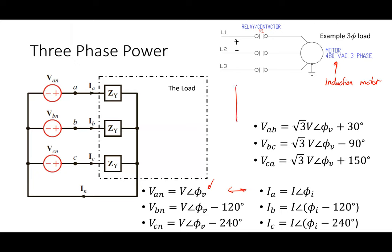Now the key thing: Vab, Vbc, Vca. What does this mean? If I were to sketch this — say Van has an angle of 30 degrees — where would Vab be? 60 degrees and it would be bigger — square root of three bigger. So is Vab leading Van or lagging it? Vab is leading Van. It's more positive — angles increase counterclockwise — so Vab is 30 degrees ahead of Van. It leads by 30 degrees.